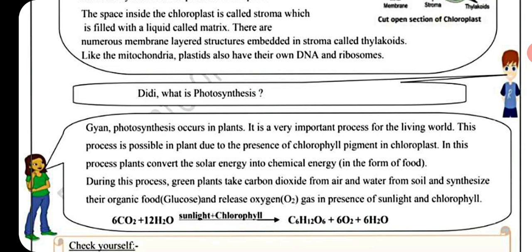During photosynthesis, green plants take carbon dioxide from the air and water from the soil, and synthesize their organic food glucose, releasing oxygen (O₂) gas. The equation is: 6CO₂ + 12H₂O in the presence of sunlight and chlorophyll gives C₆H₁₂O₆ (glucose), oxygen, and water.